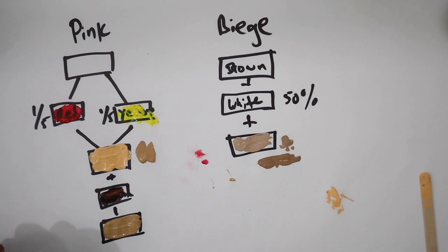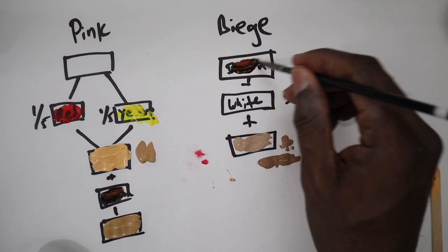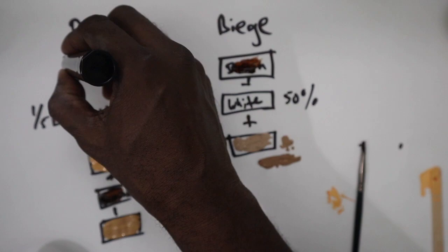That should pretty much sum up how everything is done. Let me just put this brown here so you guys can have a visual reference, and white is white. This is basically what you're looking at in terms of how you mix skin tone.